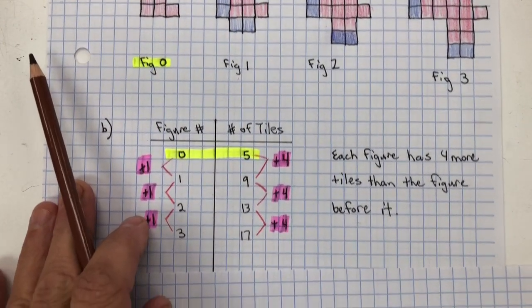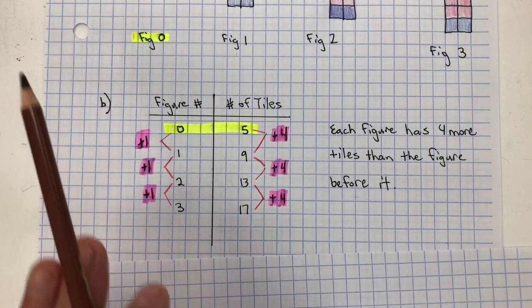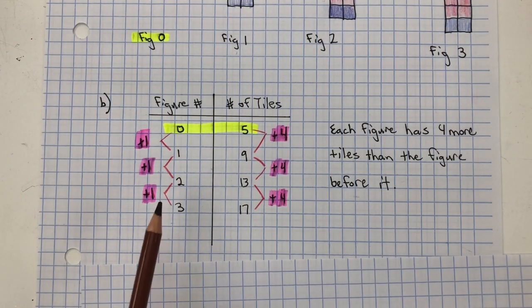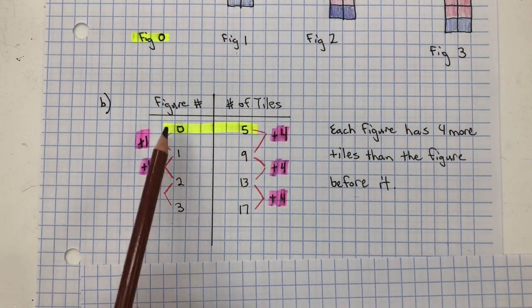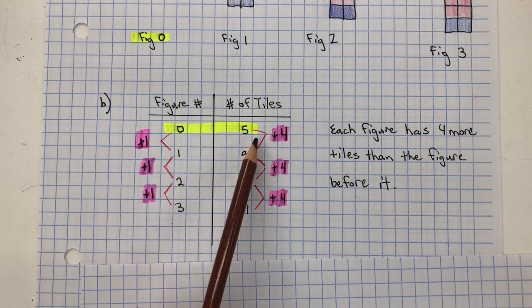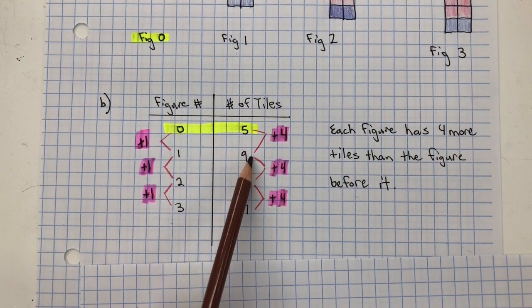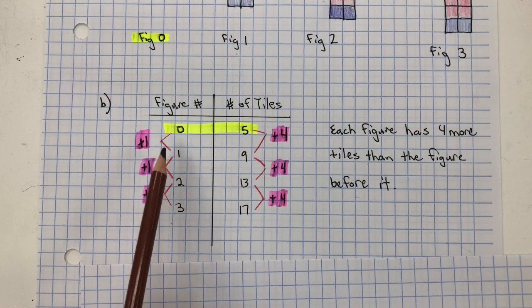In part B, you need to show how the pattern is growing in the XY table, and you can see again it's increasing by four for every figure number.